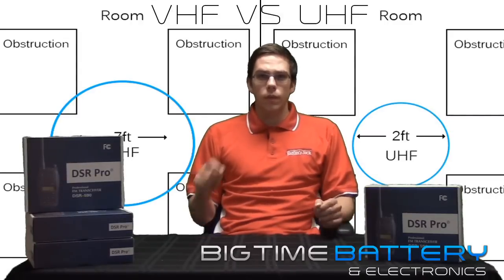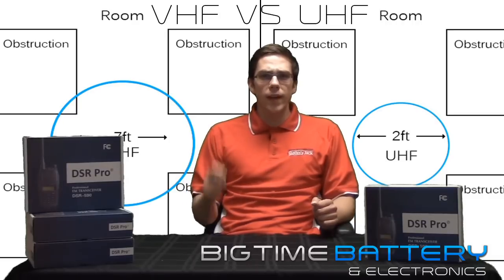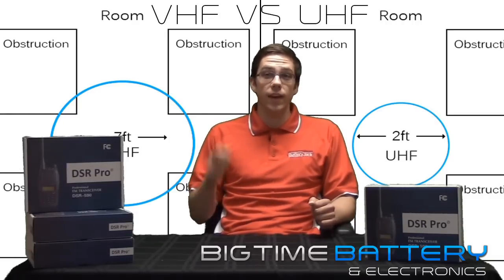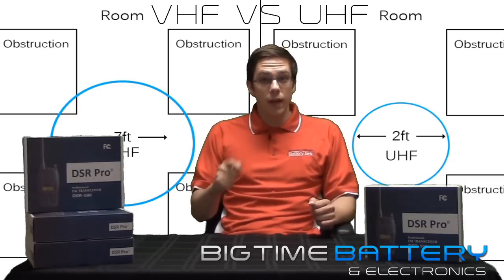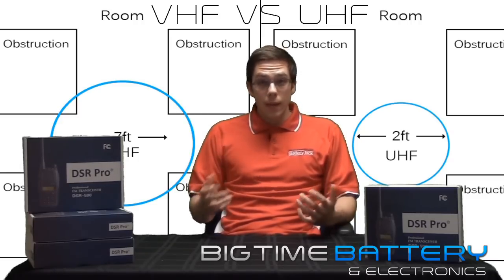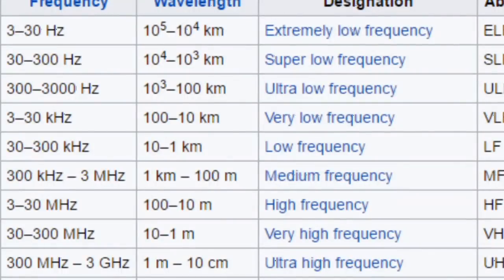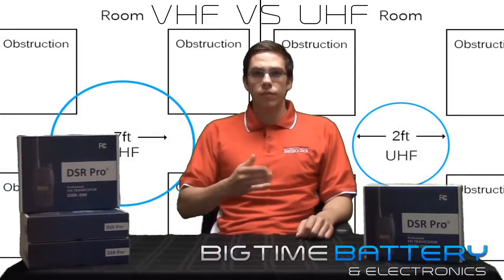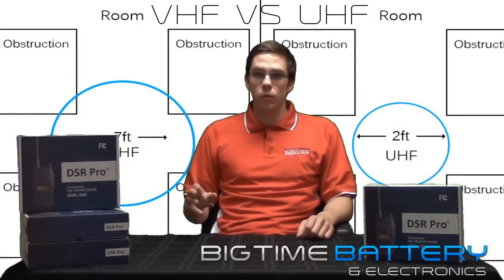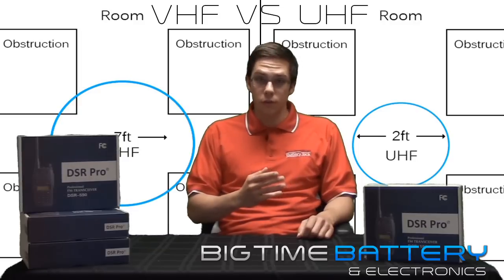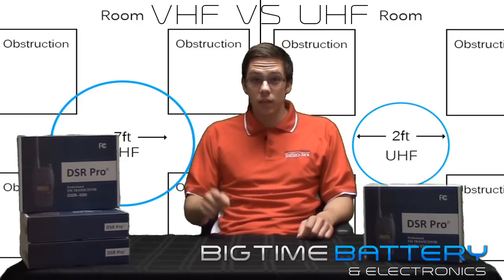The bare minimum electromagnetic wave frequency that could be classified as VHF would have to be at least 30 MHz, and the absolute highest frequency could be no higher than 300 MHz. To conclude, a VHF frequency must fall between 30 and 300 MHz for it to be a true VHF wave.